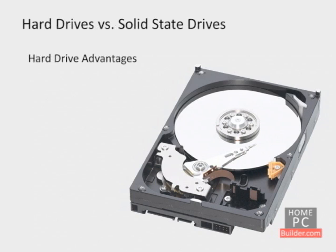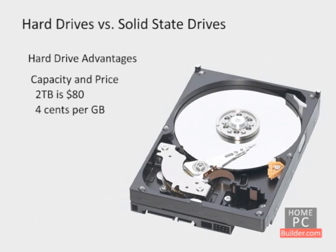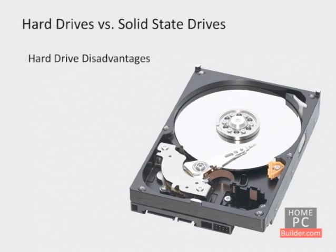The two key advantages to hard drives are their capacity to store information and their price. As of summer 2011, you can get a 2TB or 2,000GB hard drive for around $80, making the price per GB of data stored $0.04. One disadvantage of hard drives is that they are prone to failure, which puts your information in danger of being lost and requires you to regularly back up your data to another disk or an online data backup service.